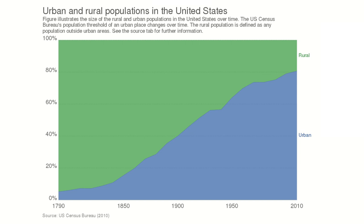Urbanization means we're closer together, so diseases can spread more easily. Historically, going back before we knew anything about infectious diseases, cities were bastions of disease. People in cities had lower life expectancies — they were demographic sinks. People would constantly move in from the countryside to fill the urban population that didn't survive very well. Now we have sanitation, but we still have the problem of living close together. That's the pandemic side of it.